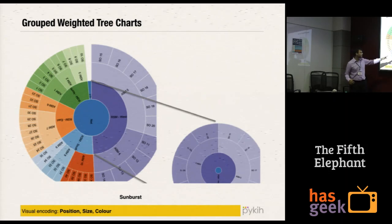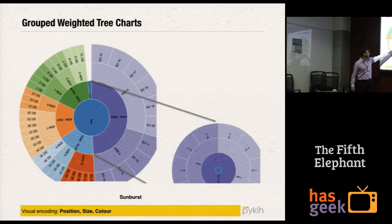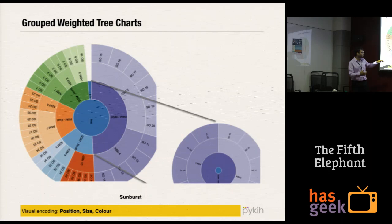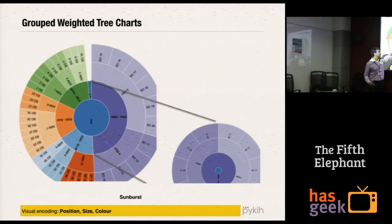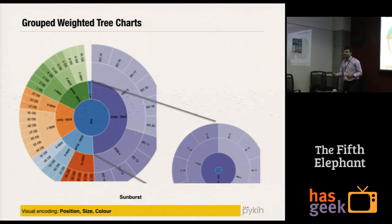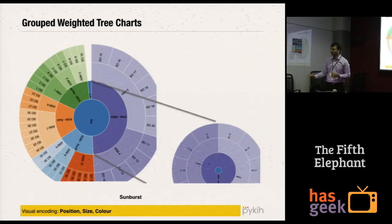Then you have south, east, north, and west — west is further managed by various area sales managers. You can quickly identify that west is broken down into area sales managers four and five, who have various sales officers within their data. So you can quickly identify what percentage of your revenue is coming from exactly which sales officer. This is a weighted grouped tree chart.